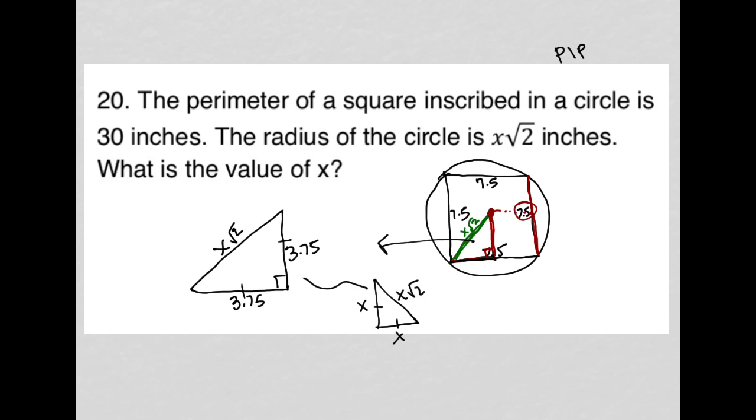So in essence, we already know what x is, right? Because x must be the legs. So this x here must be 3.75. So that's my answer.